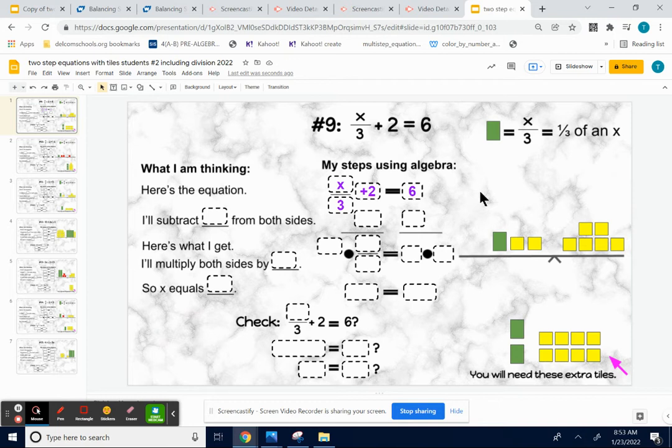In the other problems we did, we wanted to get the rectangles kind of alone. In this problem, I want to get the partial rectangle, the partial x alone. And I'm going to add or subtract. In my picture, here's x over 3. Here's plus 2. Here's equal to 6. In my picture, I have yellows next to my partial rectangle.